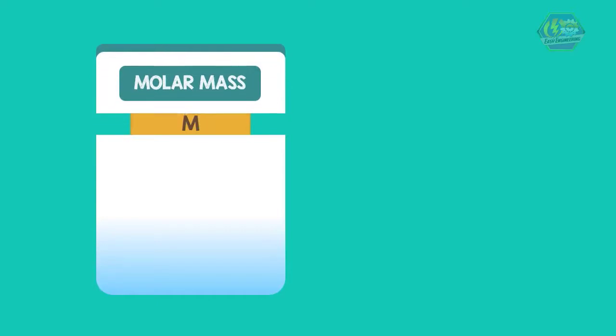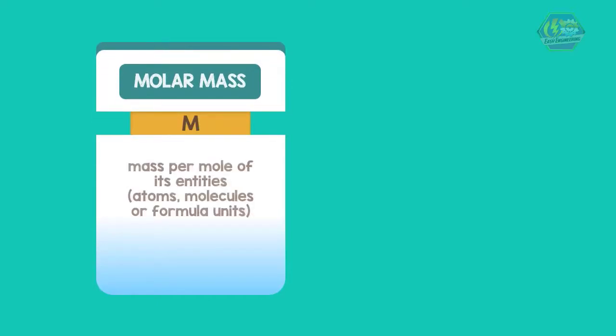Another quantity used in the laboratory is known as molar mass, denoted as M. Molar mass of a substance is the mass per mole of its entities—atoms, molecules, or formula units—and has units of grams per mole. In addition, molar mass of an element is found in the periodic table of elements.